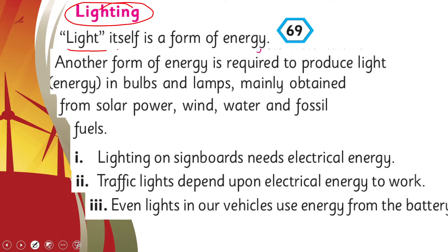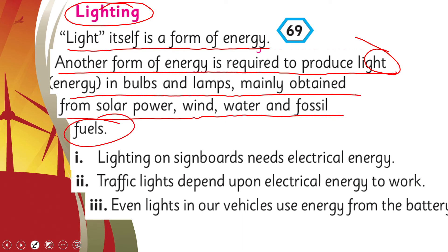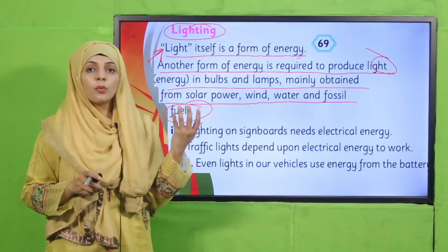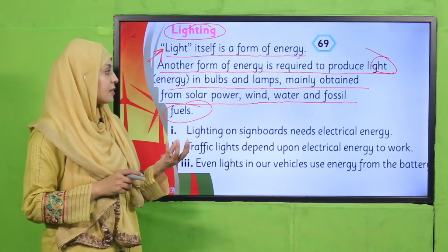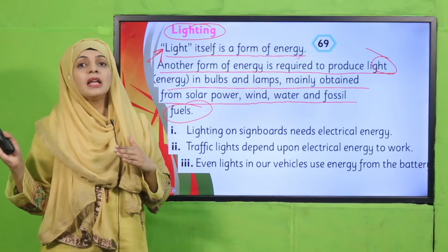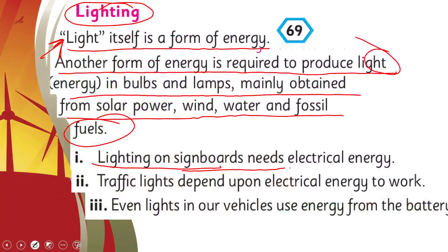Now let's discuss lighting. Light itself is a form of energy, but another form of energy is required to produce light energy in bulbs and lamps. Light is mainly obtained from solar power, wind, water, and fossil fuels. Suraj ki jo roshni hai wo itself energy hai, lekin hamare gharon mein light ki production ke liye bhi hume energy ki zarurat hoti hai. Solar power, wind, water, ya fossil fuels se electricity generate hoti hai jo fir light mein change ho jati hai. Lighting on sign boards needs electrical energy.